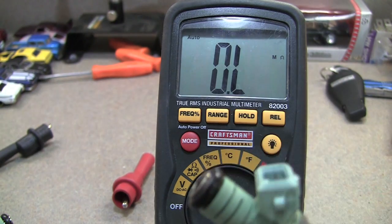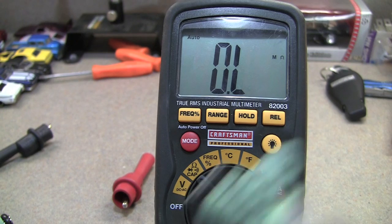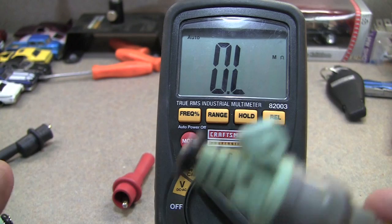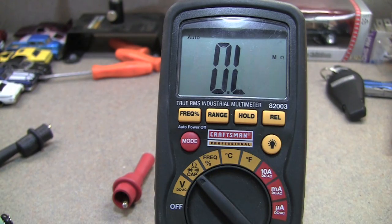...you can do this test on all of them real quick - six, eight, however many you have, four cylinder, eight cylinder. And if you've got one that doesn't read or reads a way off number from the others, then you know you've got one bad. So it's not a foolproof test, it's just a quick test.